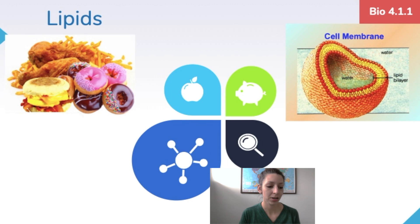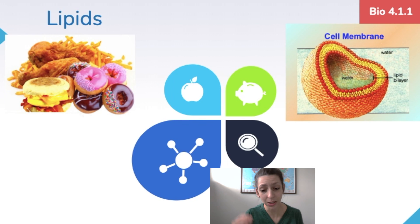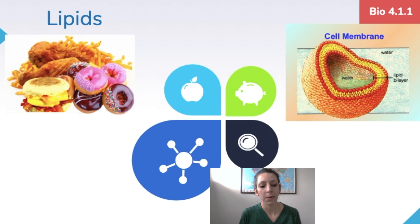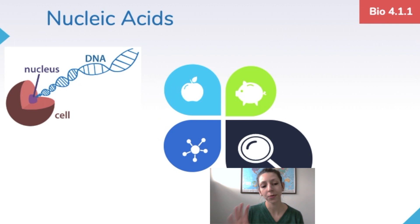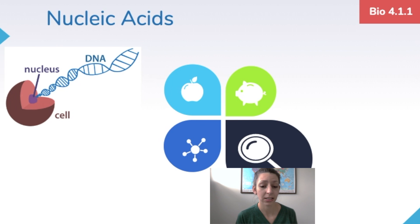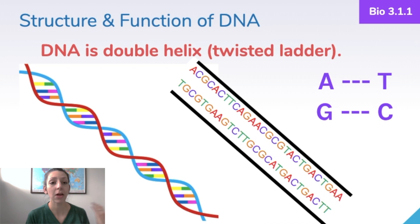Lipids include fats, oils, waxes, and even the phospholipids in the cell membrane. Every single cell in our bodies is surrounded by a phospholipid bilayer, which contains lipids. Lipids are used for long-term energy storage and insulation — think about blubber on a whale. Our fourth category is nucleic acids. DNA is a double helix — that twisted ladder — formed of A's, T's, G's, and C's. When talking about RNA, we have a U for uracil instead of T.